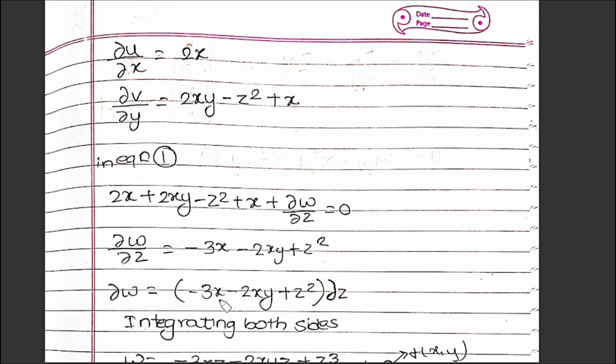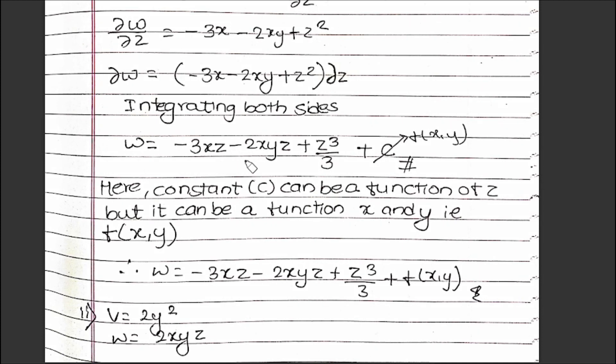To find w, I'll integrate with respect to z: w = ∫(-3x - 2xy + 2yz)dz = -3xz - 2xyz + z³/3 + C.